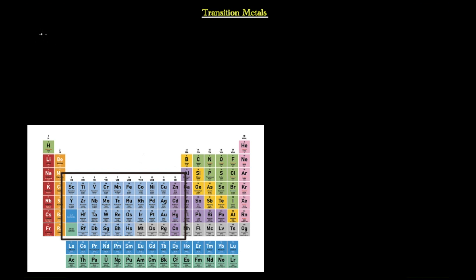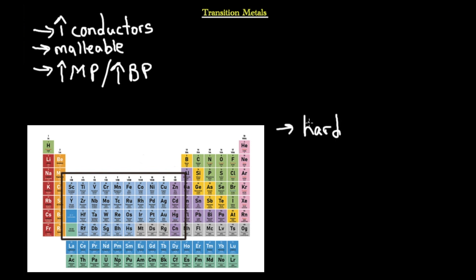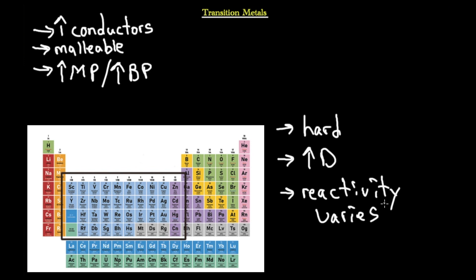Looking at transition metals, they are good conductors — they are of course metals. These metals are malleable, meaning they can be bent into shape, which is how elements like iron or nickel are used in everyday life. They have high melting points and high boiling points, they are hard, and they are much more dense than the alkali or alkaline earth metals. Their reactivity varies because they are split into different groups with different numbers of electrons in the valence shell.